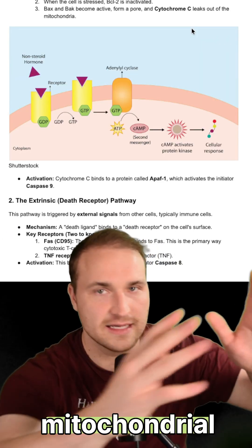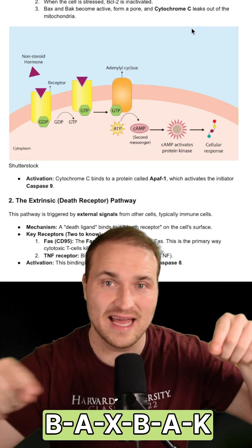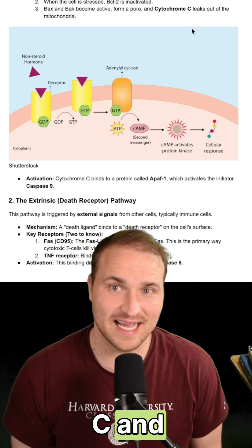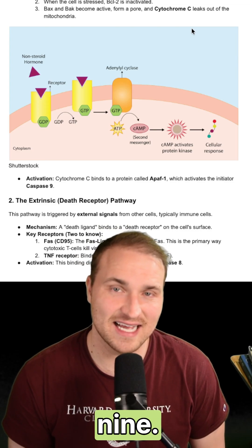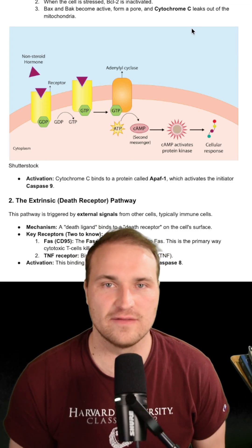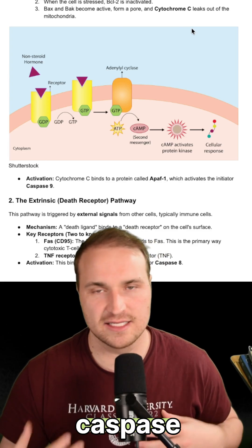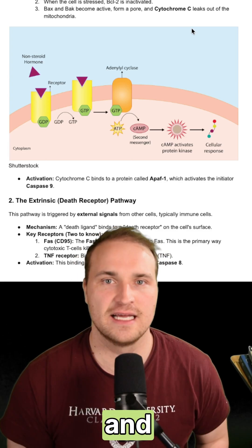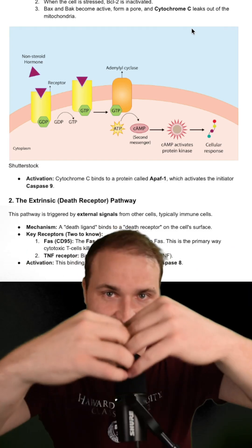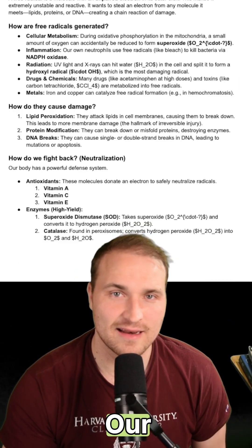The intrinsic pathway is mitochondrial first, and then you have the BAX/BAK pathway causing cytochrome C release and caspase 9. The extrinsic pathway involves FAS or the TNF receptors, which then lead to caspase 8. Both converge onto caspase 3 — think of caspase 3 as the executioner.